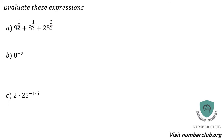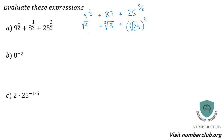If we've got 9 to the power of 1 half, that's the square root of 9. 8 to the power of 1 third is the cube root of 8. Plus the square root of 25, all cubed. The square root of 9 is 3, the cube root of 8 is 2, and the square root of 25 is 5 — then 5 cubed is 125. So you get the sum 3 + 2 + 125, which is 130. Those are three different types of powers you really should know how to deal with.